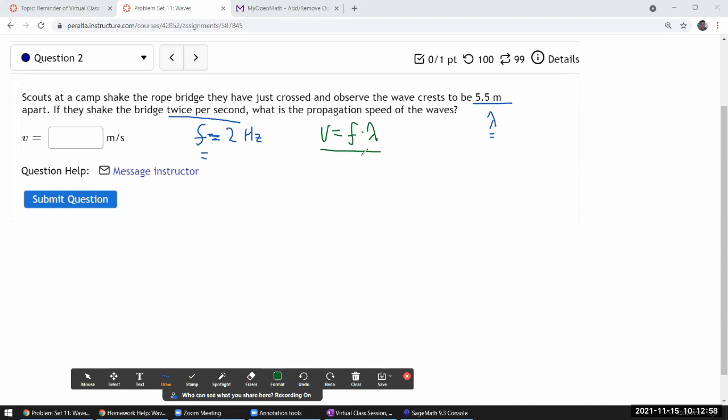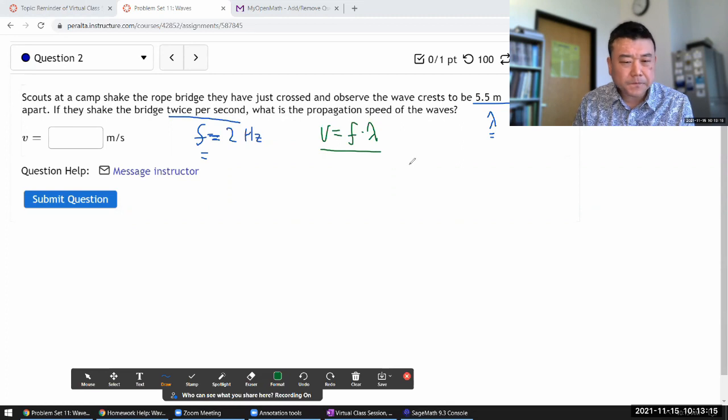by remembering the relationship between units: meters per second, one over second, meter. The only way these two can combine to give me meters per second is in this way.